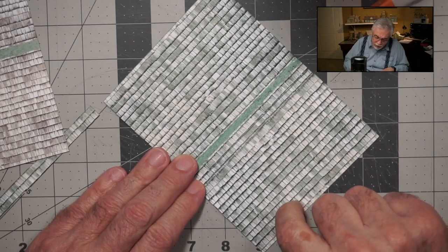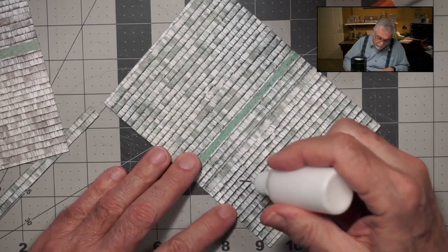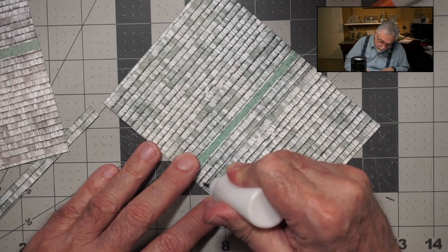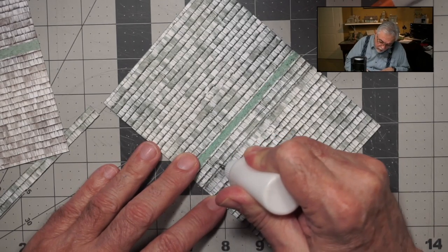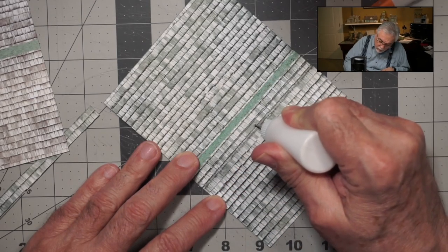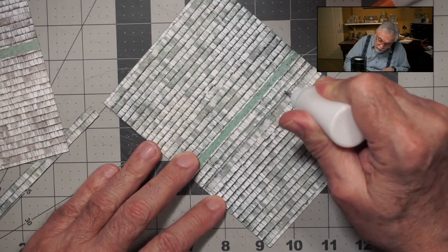So let's go ahead and glue this. As you can see, I've already added a number of rows. But this will give you an example. I just place dots along here.